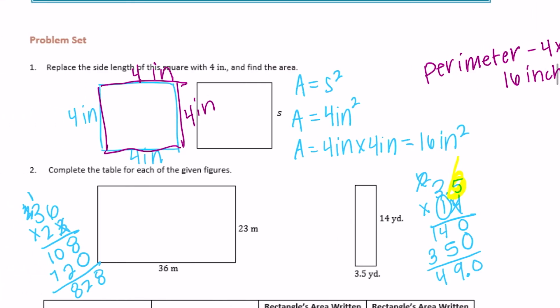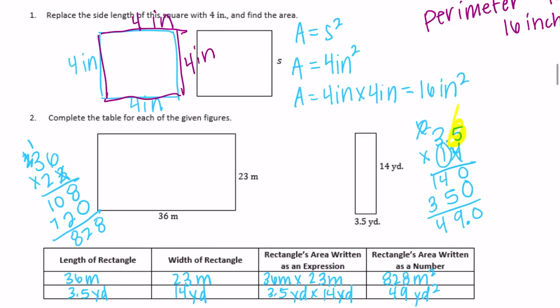The next one, on number two, so this is thirty-six meters, this is twenty-three meters. So then this side is also twenty-three meters, and this length is thirty-six meters. So twenty-three and twenty-three is forty-six, and thirty-six plus thirty-six is seventy-two.